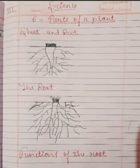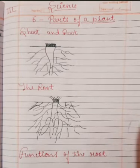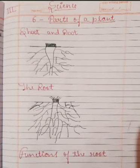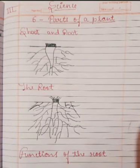Good morning class three students. Today in science class we will continue our chapter 6, Parts of a Plant. We have already discussed the parts of a balsam plant, and we have already discussed that both our body and the plant's body have different parts. Today we will read about some parts of the plant.